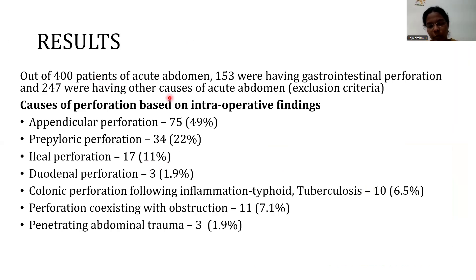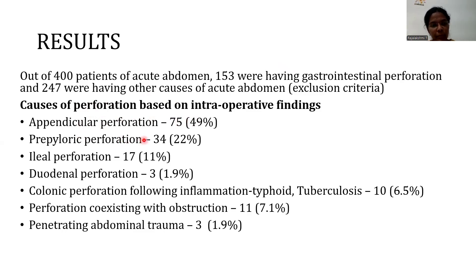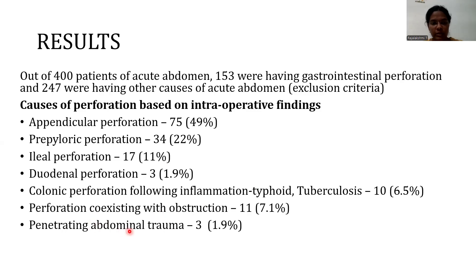Results: out of 400 patients with acute abdomen, 153 had gastrointestinal perforation and 247 had other causes and were excluded. Causes of perforation: appendicular perforation was the most common, forming 49% of cases with 75 patients. Pre-pyloric perforation was in 34 patients, ileal perforation in 17, colonic perforation following inflammatory conditions like tuberculosis or typhoid in 10 patients, and 3 patients had penetrating abdominal trauma causing gastrointestinal perforation. Some patients had co-existence of both perforation and obstruction.